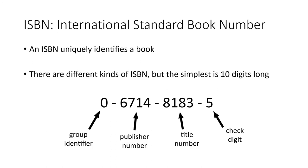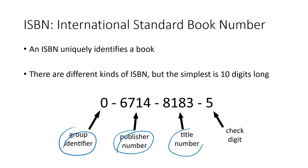Another example that uses a modified weighted sum is ISBN — the International Standard Book Number. There are different kinds of ISBN with different lengths, but the simplest is a 10-digit number. Just like a UPC code, it's broken up into groups: a group identifier, four digits for the publisher, four digits for the title, and the 10th digit is a check digit.